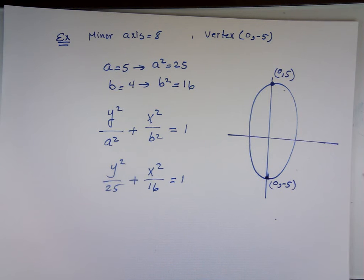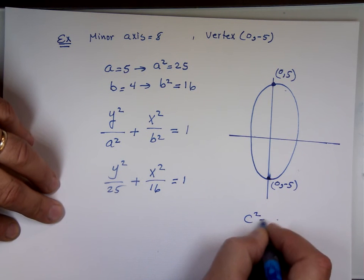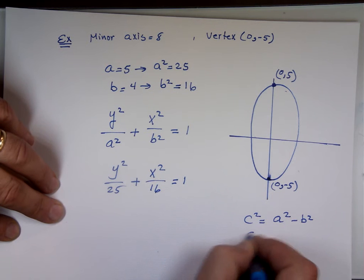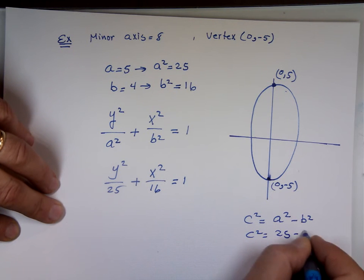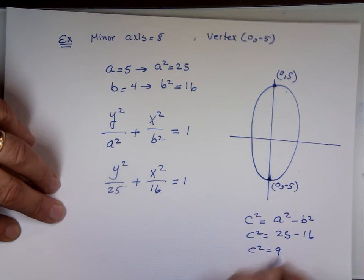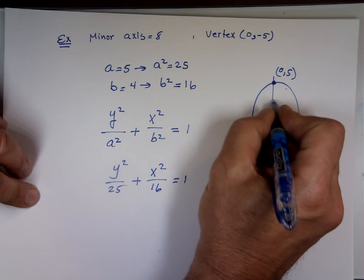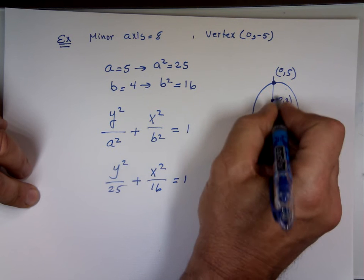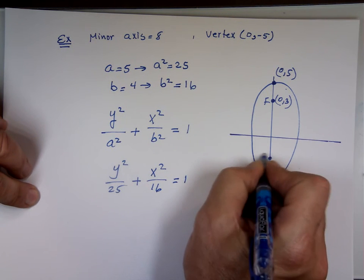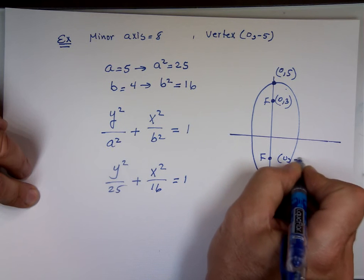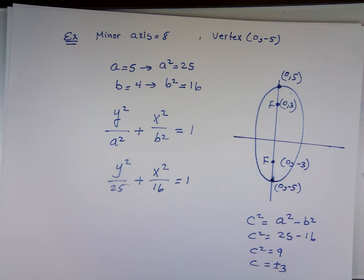To find the focal points: C squared equals A squared minus B squared, which gives C squared equals 9, so C equals 3. The two focal points are at (0, 3) and (0, −3). The major axis is 10 — twice A. By giving you that information backwards, you can work through the problem and figure out everything you need.